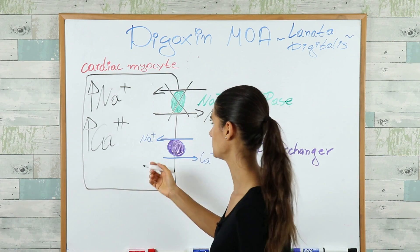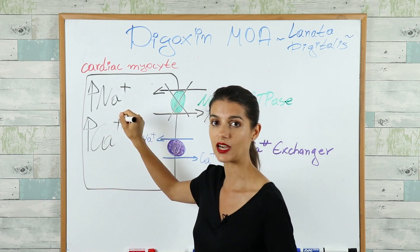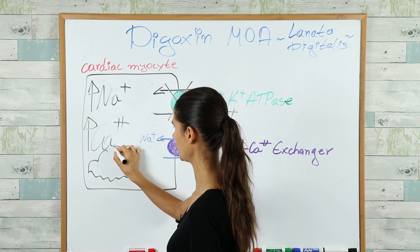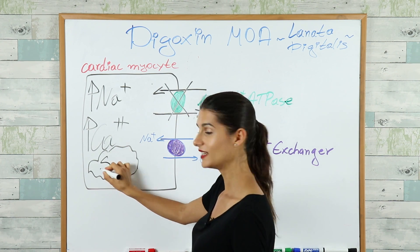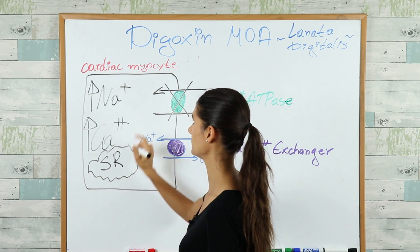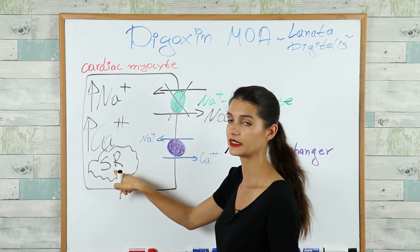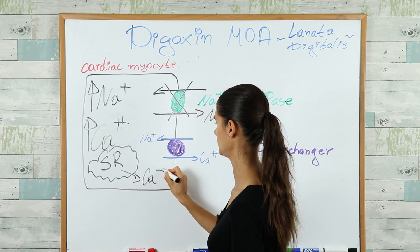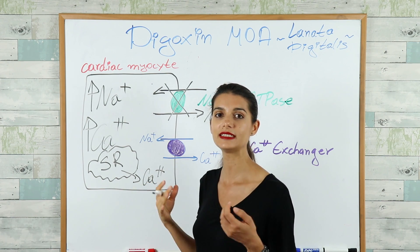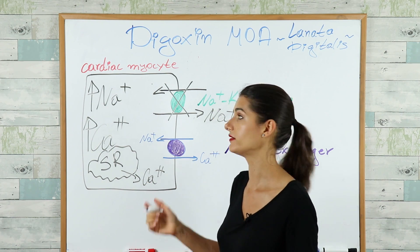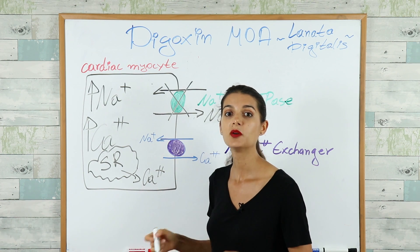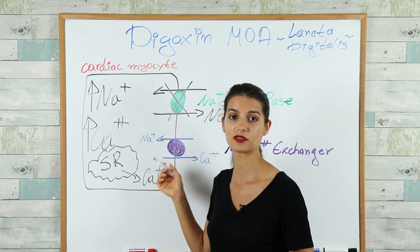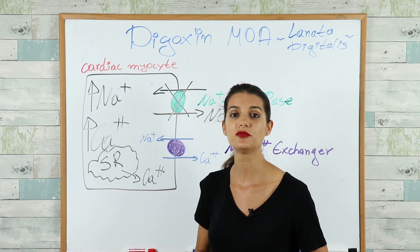As a downstream effect, this increased calcium concentration will cause more release of calcium ions from the sarcoplasmic reticulum inside the cardiac myocyte. More calcium spills out from the sarcoplasmic reticulum and binds to troponin C, which leads to eventual cardiac myocyte contraction. For more on the exact mechanism of cardiac muscle contraction, check out our Action Potential video.